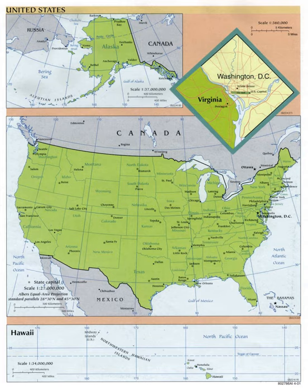All state governments are modeled after the federal government and consist of three branches, although the three-branch structure is not constitutionally required: executive, legislative, and judicial. They retain plenary power to make laws covering anything not preempted by the U.S. Constitution, federal statutes, or treaties ratified by the U.S. Senate, and are organized as presidential systems where the governor is both head of government and head of state, even though this too is not required.